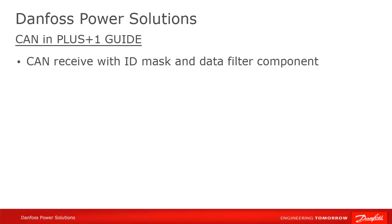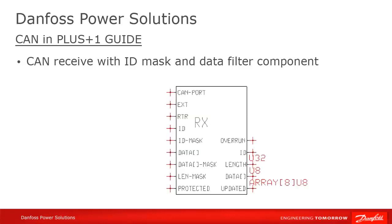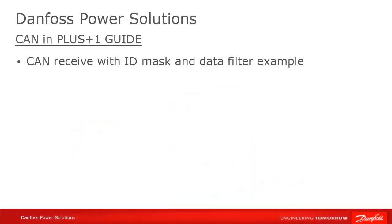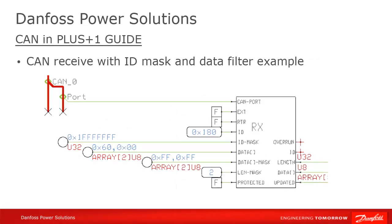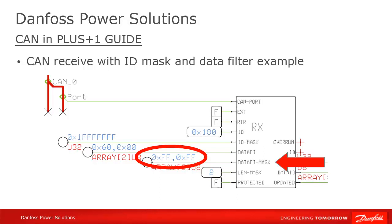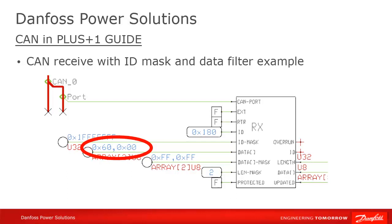CAN receive with data filter works similarly, but you are also able to filter messages based on the values in the data array attached to the message, in addition to the message ID. A bit value of 1 in the mask means that the incoming message value has to match what we've supplied to the component; a 0 means that we don't care. Here's how a CAN receive with message ID and data filter could be used. Our ID mask is all 1s, so we'll only get messages that exactly match our message ID of 0x180. We have two bytes of data mask, both all 1s, so we'll only receive messages where the first byte is exactly 0x60 and the second byte is 0. Note that the protected flag is false, so if multiple messages came in the last loop meeting these criteria, we will only receive the last one.